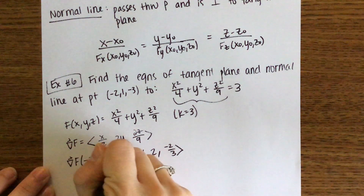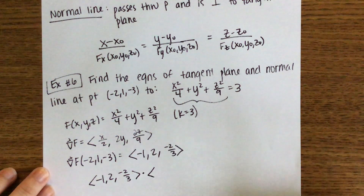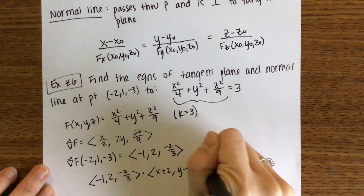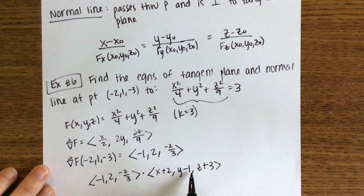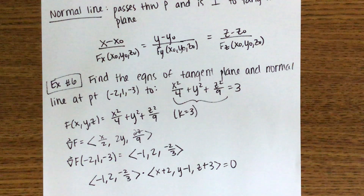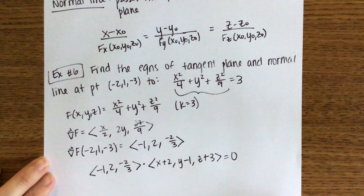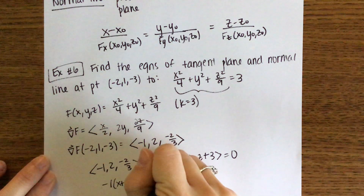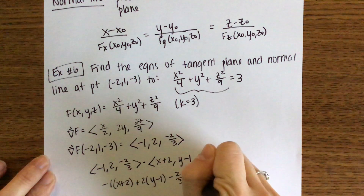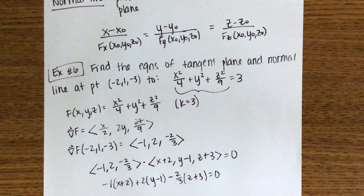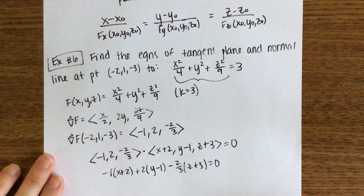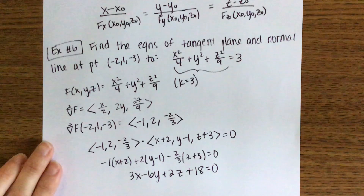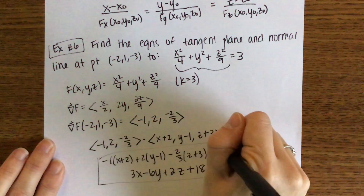The tangent plane is that gradient vector dotted with (r − r-naught) equals zero: −1(x − (−2)) + 2(y − 1) − (2/3)(z − (−3)) = 0. Multiplying out and then multiplying through by 3 to clear the fraction gives: 3x − 6y + 2z + 18 = 0. Either form is a valid equation for the tangent plane.